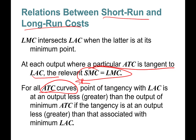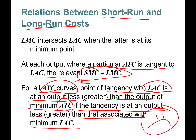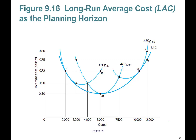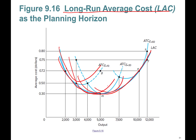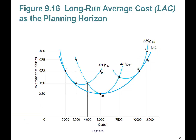For all average total cost curves — which are short-run — the point of tangency with the long-run average cost curve occurs at an output level less than the minimum of that average total cost curve, if the tangency is to the left of the minimum of the long-run average cost curve. Let me go over the graph visually. The long-run average cost curve is U-shaped, and there are an infinite number of short-run average total cost curves tangent to it.